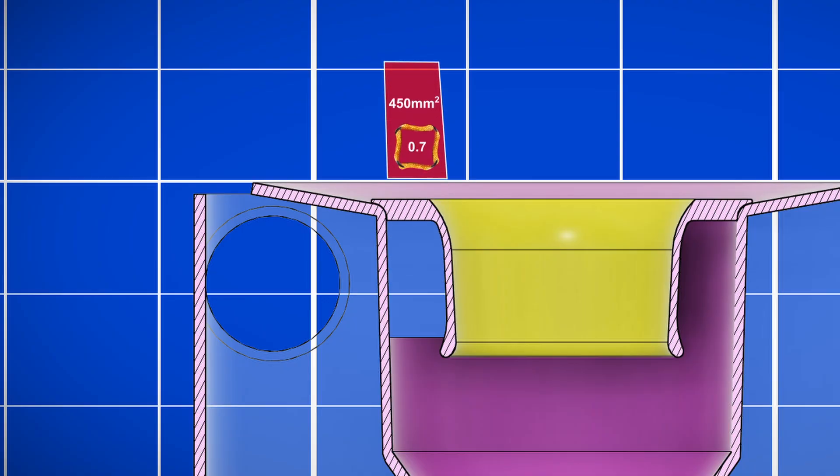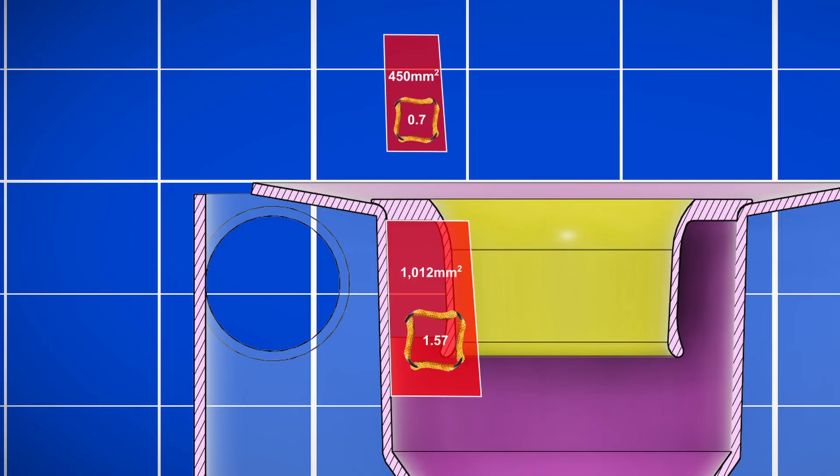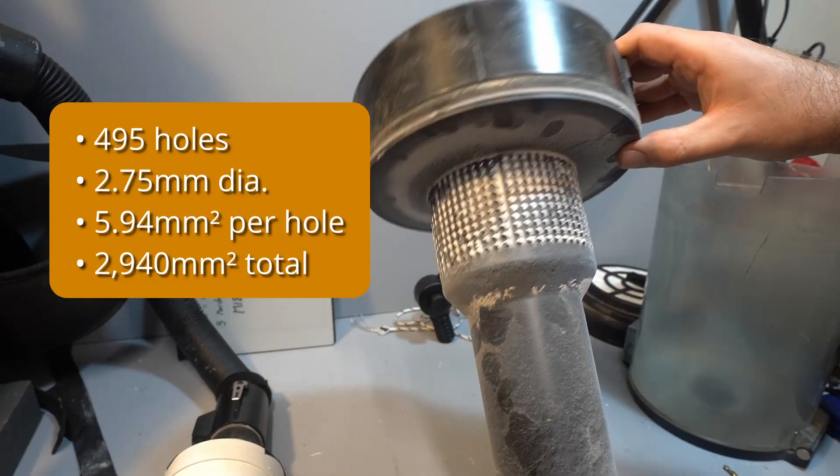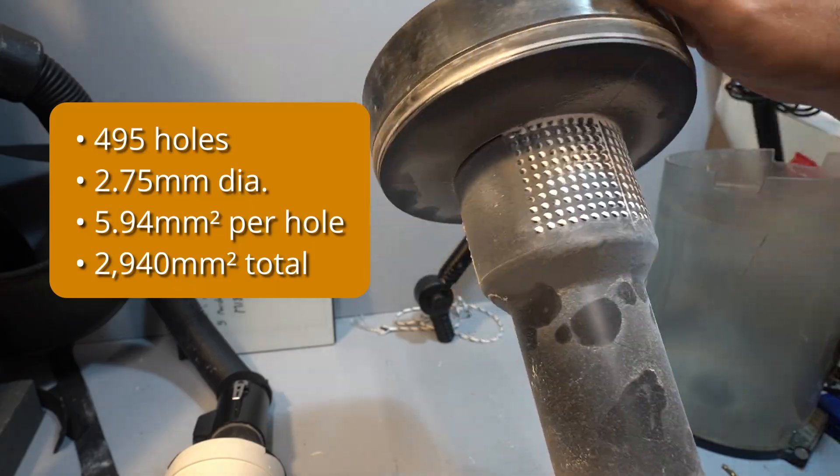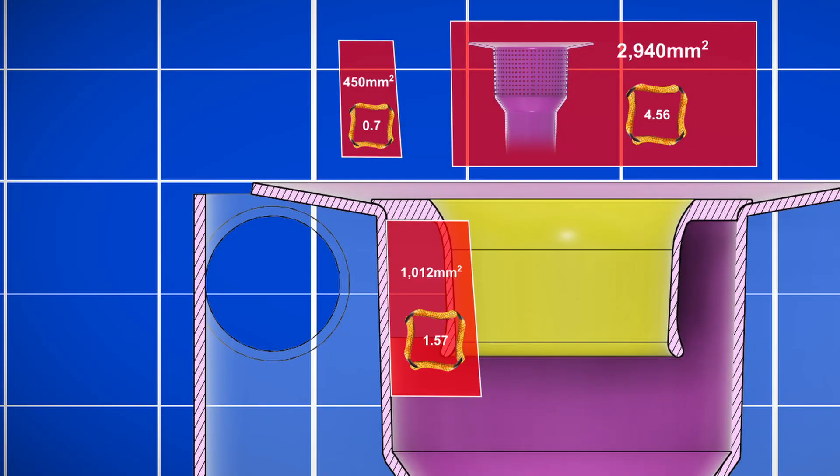The standard cyclone would have a 22.5x45mm inlet for 1012mm², so we're at less than half of what we should be which is going to lose us a lot of flow. The original vacuum's inner cone has an inlet area of 2940mm², so 450mm² is really going to hurt the flow rate.